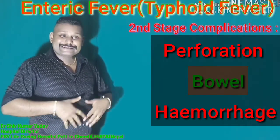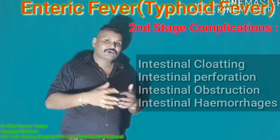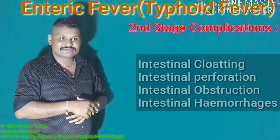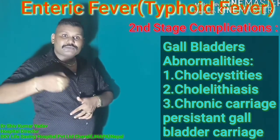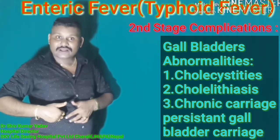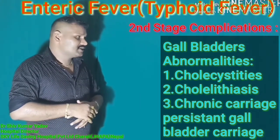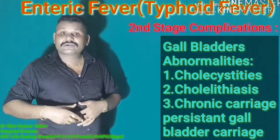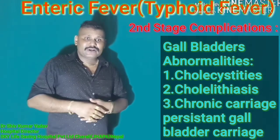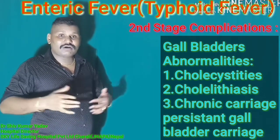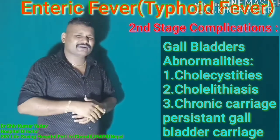The second stage complications involve the bowel — either perforation or hemorrhage. Intestinal perforation, intestinal hemorrhage, intestinal obstruction, and intestinal tract infection can occur. The anterior part affected is the gallbladder, and the patient may experience cholecystitis or cholelithiasis. On sonology, the gallbladder wall may be thickened or tiny cholesterol stones may be present.